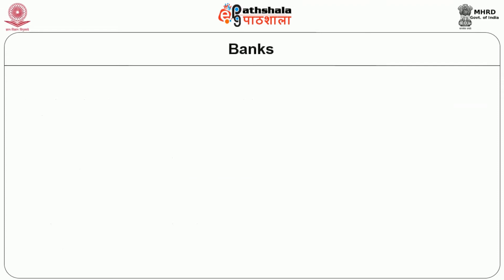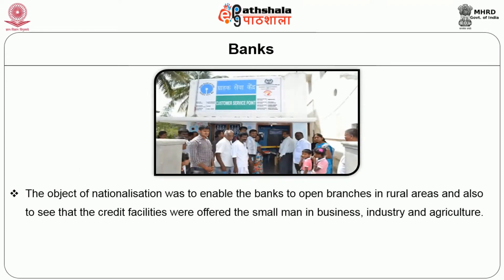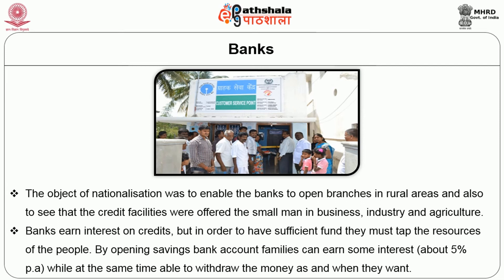The next saving type is banks. The object of nationalization was to enable banks to open branches in rural areas and to ensure that credit facilities were offered to the small man in business, industries, and agriculture. Banks earn interest on credits, but in order to have sufficient funds, they must tap the resources of the people. By opening a savings bank account, families can earn some interest, about 5% per annum, while at the same time being able to withdraw the money as and when they want.